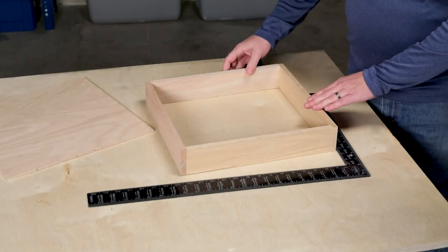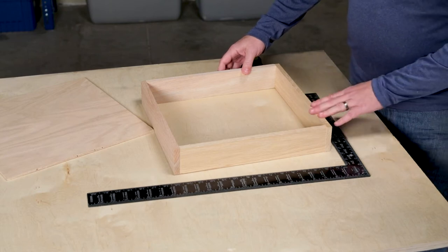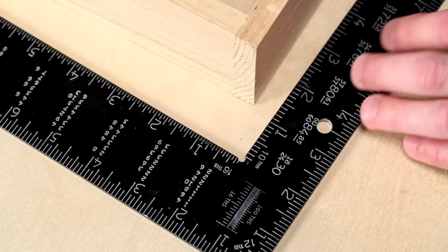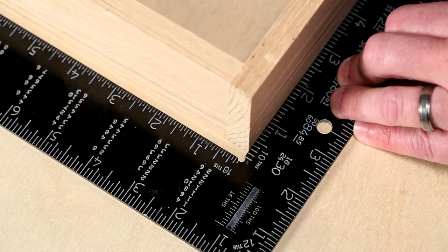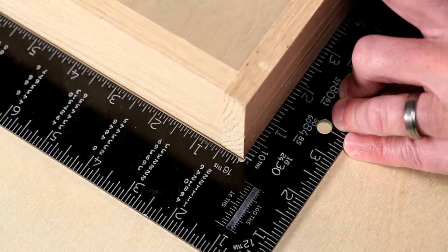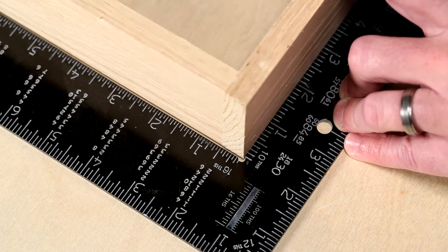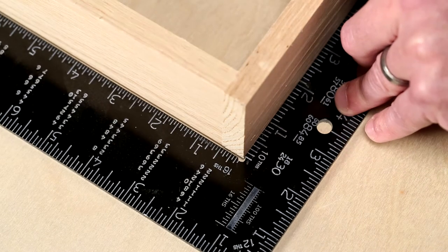Most of the time assemblies need to be nice and square to go together right. Here's a few simple ways you can check. A square like this framing square works great. Just align one side and then look along the other side. If you see any gap, then you know the piece is out of square and you're going to need to make some adjustments.